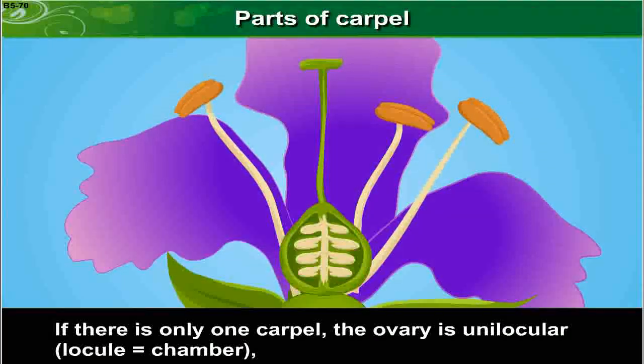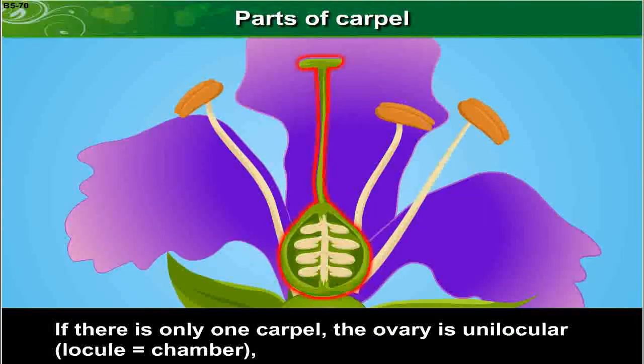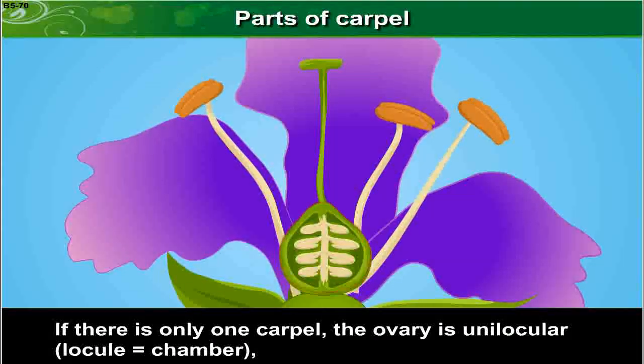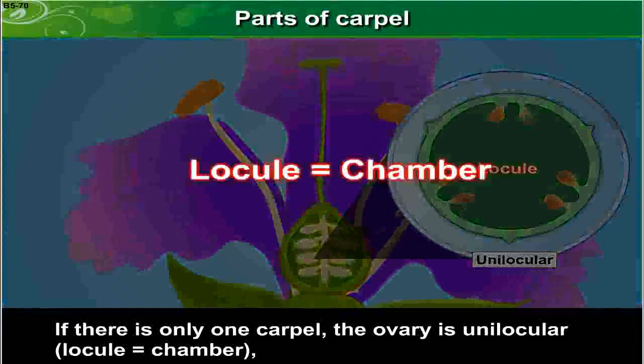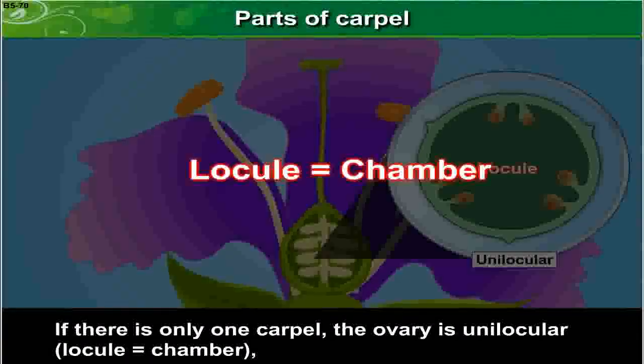If there is only one carpel, the ovary is unilocular. Locule means chamber.